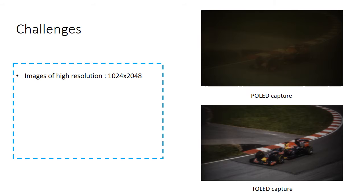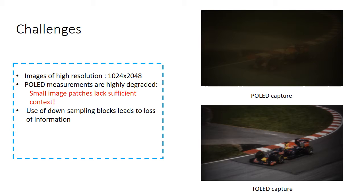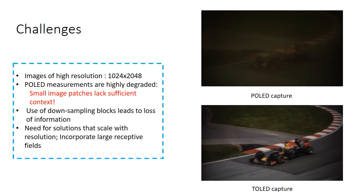The challenges in restoring UDC images include the need for high resolution processing, since the images are of size 1024x2048, and this would be even higher for high-end phones that use OLED displays. POLED measurements are also highly degraded, precluding the use of learning-based methods that operate on small image patches, since they lack sufficient context for faithful restoration. Downsampling blocks used in typical convolutional neural networks are also not suitable due to the loss of valuable information needed for the dense prediction task. Thus, there is a need for solutions that scale with resolution and also incorporate large receptive fields efficiently.